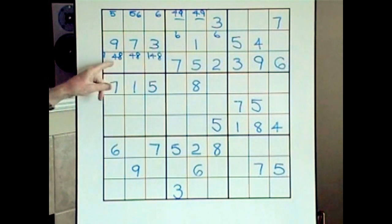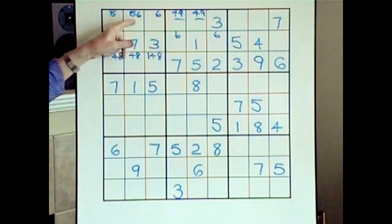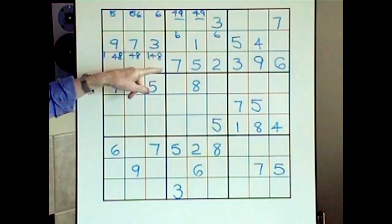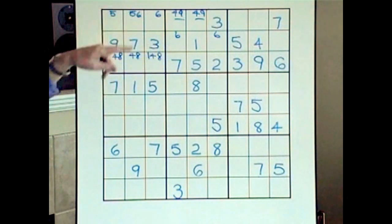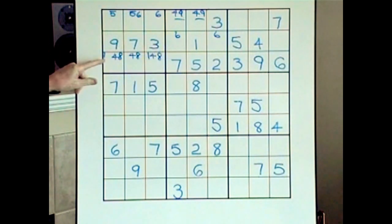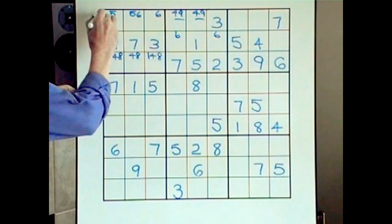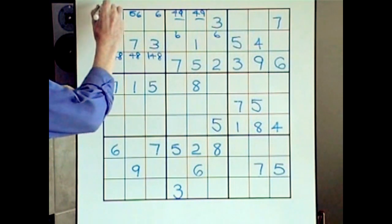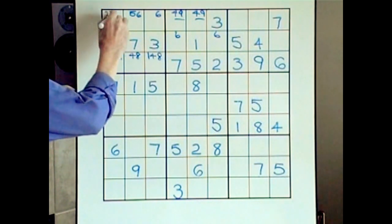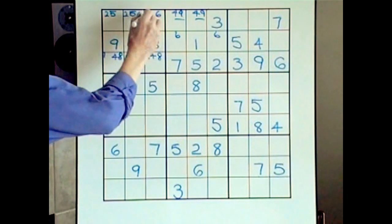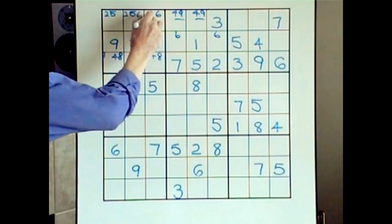Because we've got an eight and a one, and we know that only a one and an eight can fit in these three cells, we can now work out what should go up there. What you do is count the whole block — one, two is missing — so two can go up here, it can go there, and it can go there.